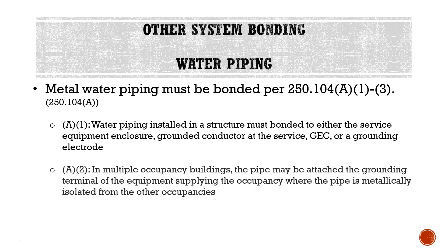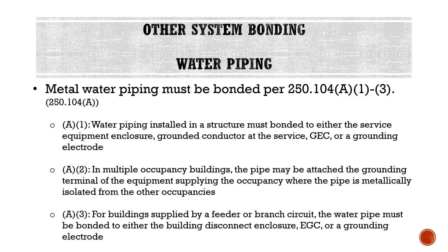A2: in a multiple-occupancy building, the pipe may be attached to the grounding terminal of the equipment supplying that occupancy, where the pipe is metallically isolated from other occupancies. For example, in a mall, if one store is supplied by a metal water pipe that doesn't connect to any other occupancy, we can connect it to the grounding terminal of the equipment supplying that store. A3: for buildings supplied by a feeder or branch circuit, the water pipe must be bonded to the building disconnect enclosure, the equipment grounding conductor, or a grounding electrode.